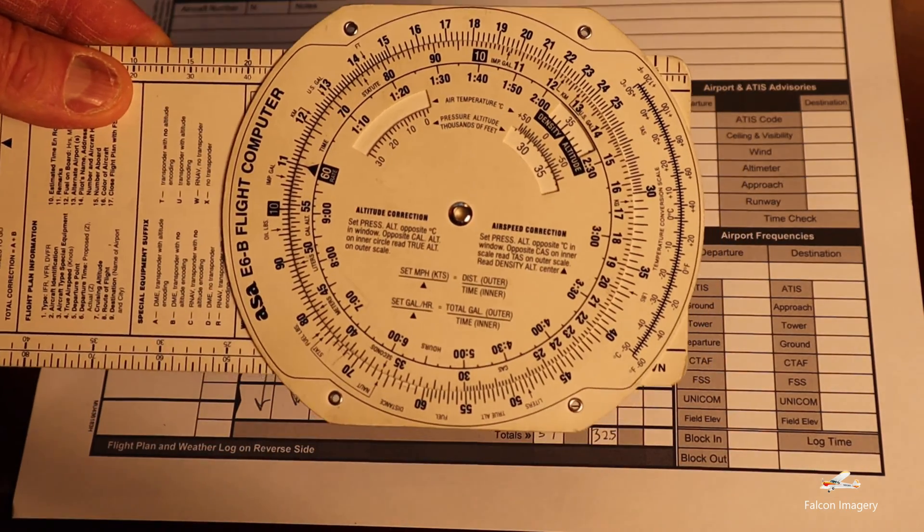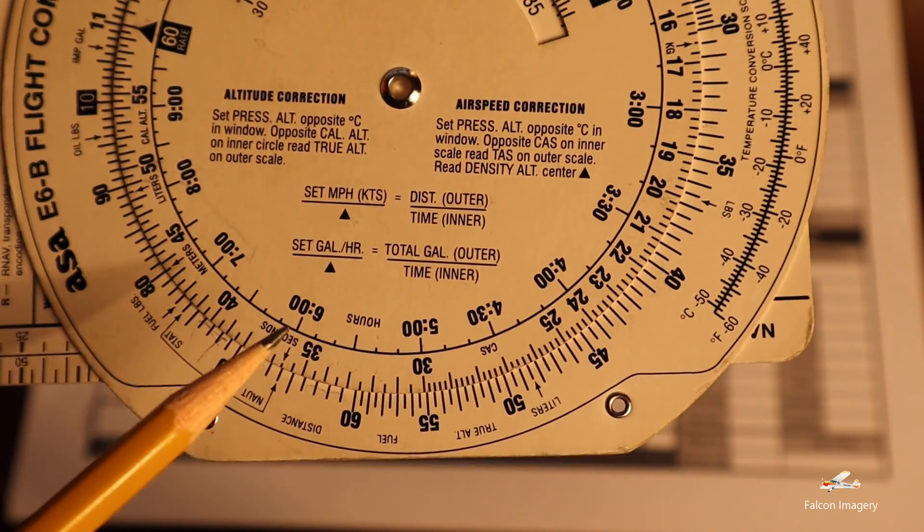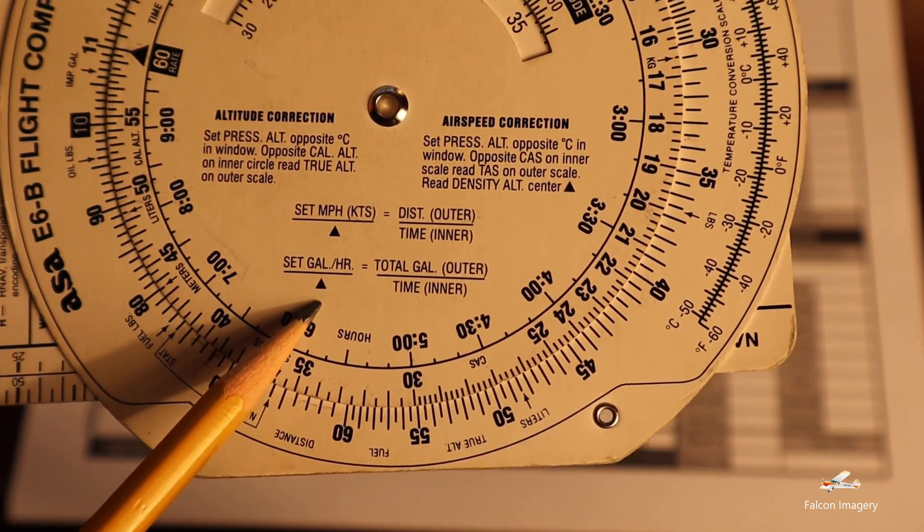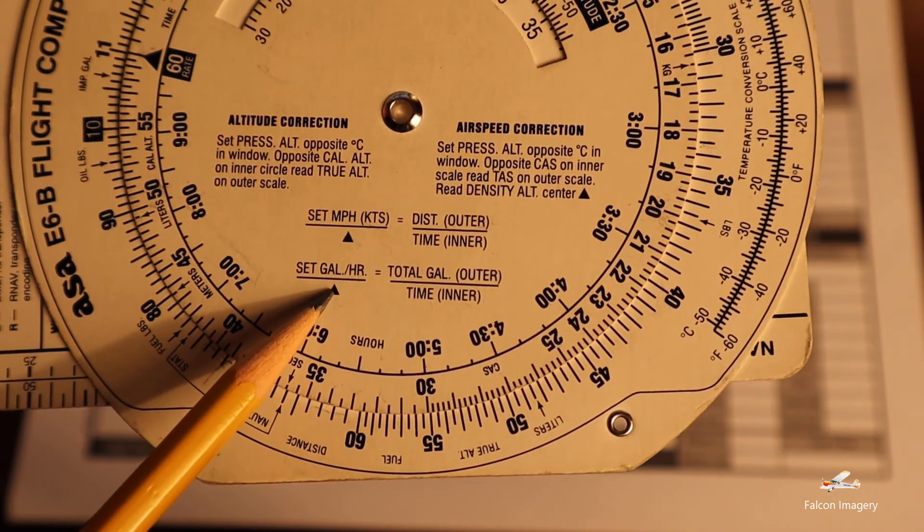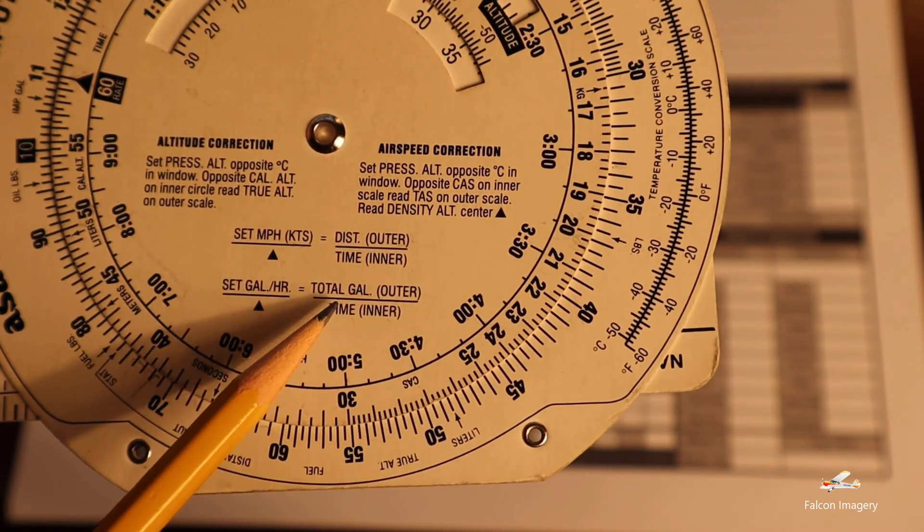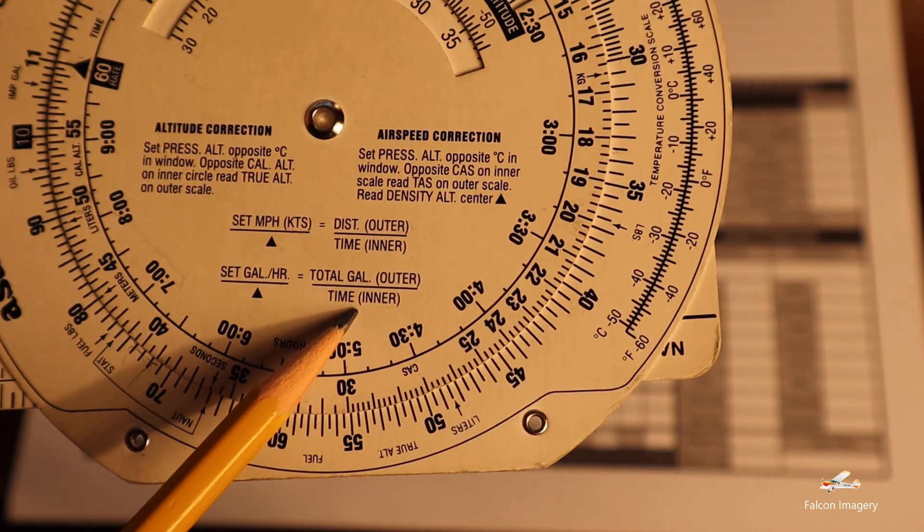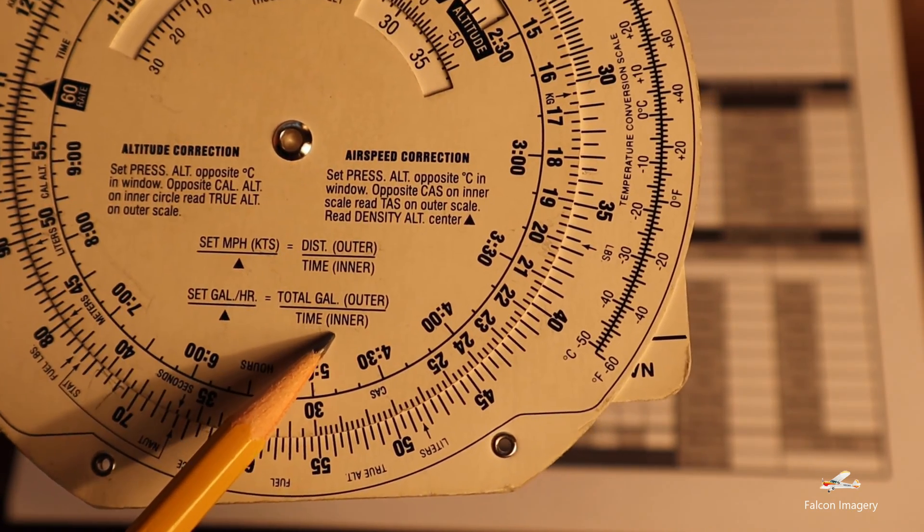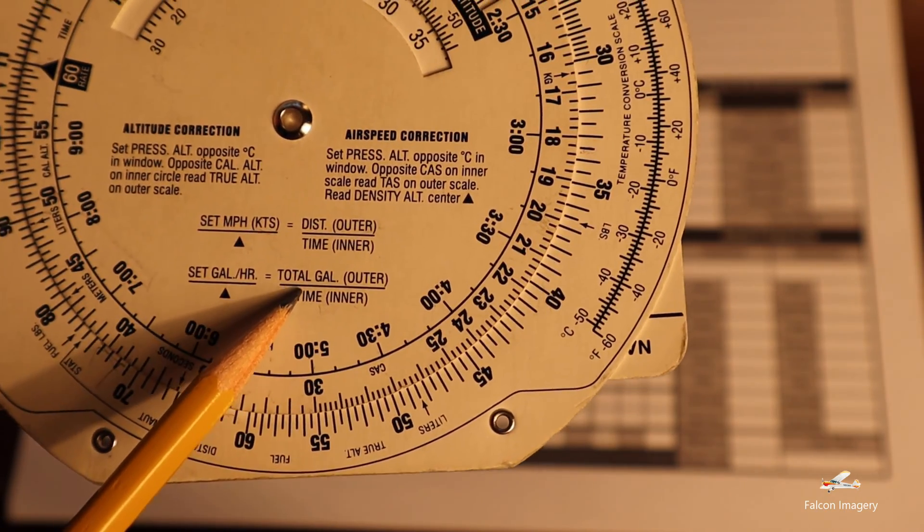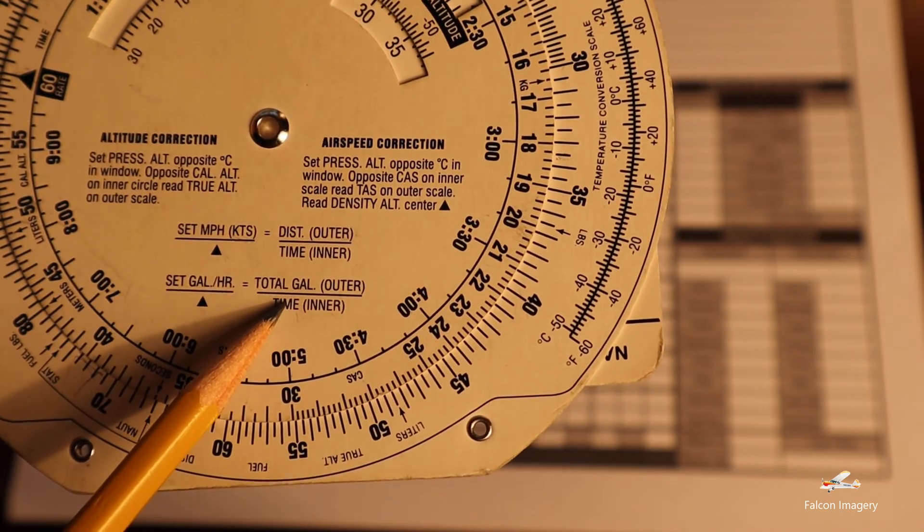We have our E6B whiz wheel. What we want to look for is this bottom set of instructions where we've got a triangle here. We want to put the triangle underneath the gallons per hour burn rate that we're going to burn. In this case, we're going to be burning eight and a half gallons per hour in cruise. Then we look at our estimated time en route by looking at the inner or middle set of numbers, and then going up to the outer ring to determine the number of gallons we're going to burn along that leg of the cross-country flight.